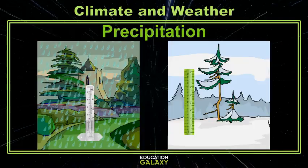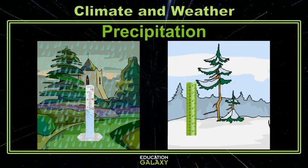You could also describe the amount of precipitation, or water falling back down to Earth. We generally measure rain precipitation with a simple rain gauge in inches, but with solid water precipitation like snow, we use a ruler.